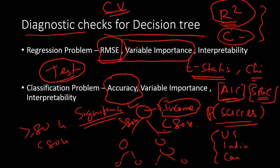However, variable importance in decision tree may not be as convincing as a regression model. That's exactly why, when it comes to interpreting results to find causal relationships between predictors and the target variable, it is always better to go with a regression model over decision tree. Thank you.